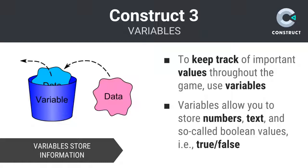Most programming platforms restrict what can be stored within a variable by certain so-called data types. In Construct, you can store numbers, text, and boolean values in a variable. Boolean is just a fancy word for true, false, yes, no — type binary values.